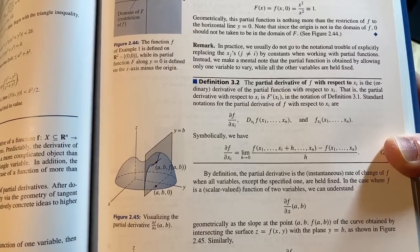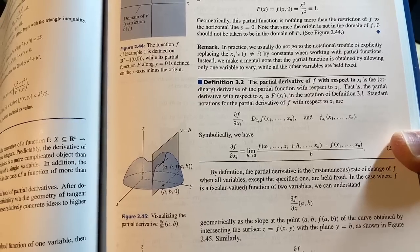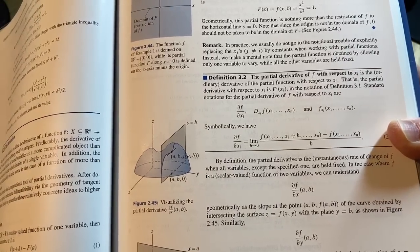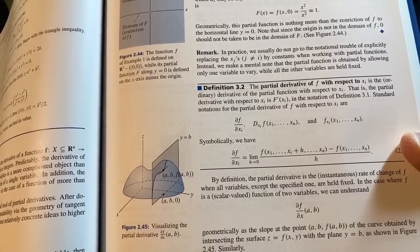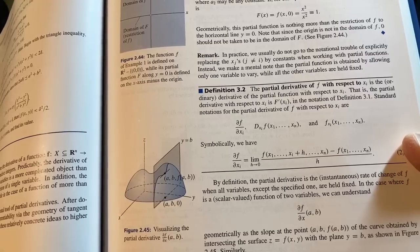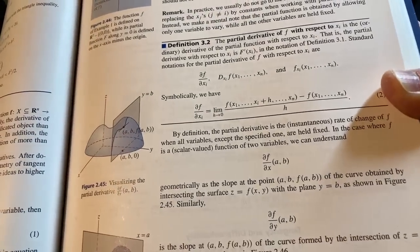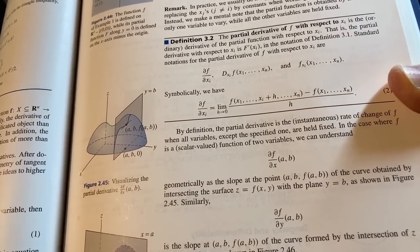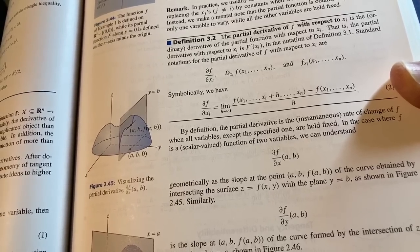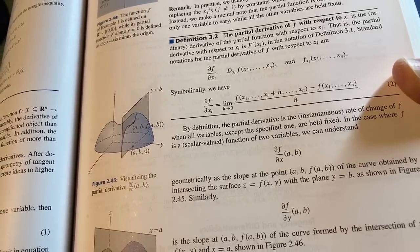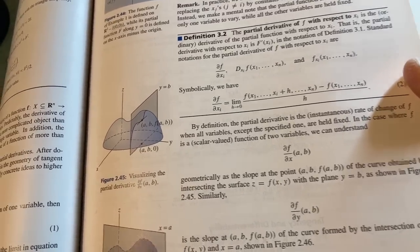I'm very similar to the definition for the derivative of a function of a single variable. By definition, the partial derivative is the instantaneous rate of change of F when all variables except the specified one are held fixed. In the case where F is a scalar valued function of two variables, we can understand the partial derivative of F with respect to X at AB geometrically as the slope at the point with the coordinates A comma B comma F of AB of the curve obtained by intersecting the surface Z equals F of X Y with the plane Y equals B as shown in figure 2.45.